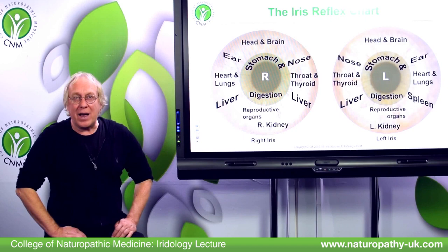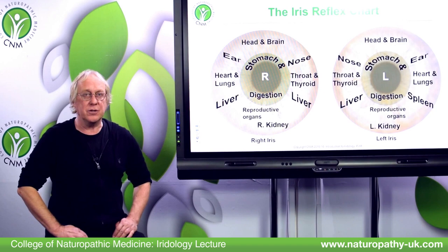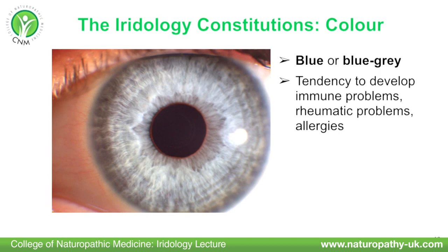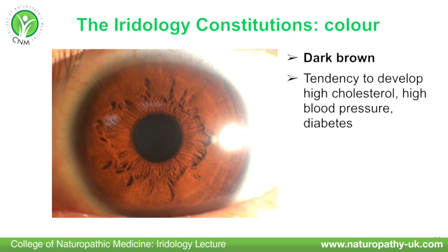Wouldn't it be nice if there was a way, especially for us as natural health practitioners, where we could get an insight into the individual constitution of the patient we're looking at. This is exactly the sort of information that iridology can give us. It's based on that idea of constitution. Individuals with different coloured eyes have different basic constitutions, and people with blue eyes have a very different constitutional management system than people with dark brown eyes. We can plot that they are each individually prone or susceptible to different types of diseases and different pathways of diseases.